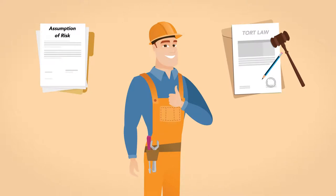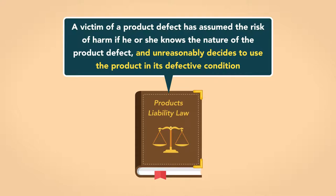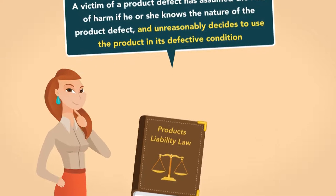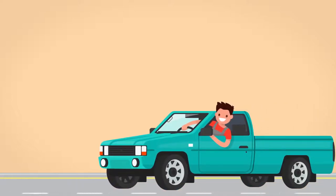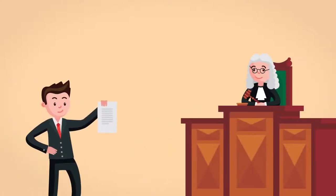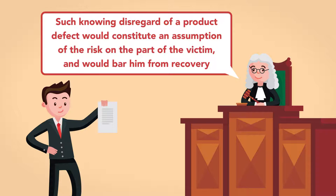Assumption of risk serves as a defense to a tort claim if the plaintiff knew and understood the risks of the behavior and chose to engage in the behavior anyway. In product liability cases, a victim of a product defect has assumed the risk of harm if he or she knows the nature of the product defect and unreasonably decides to use the product in its defective condition. To illustrate, consider the case of someone who was severely injured after the steering wheel in his pickup truck locked in place, leading to a serious accident. The defendant cited the driver's own admission that this problem with the steering wheel had occurred before and the driver continued to drive the truck, knowing that the defect made it unsafe to drive. The court agreed that such knowing disregard of a product defect would constitute an assumption of the risk on the part of the victim and would bar him from recovery.